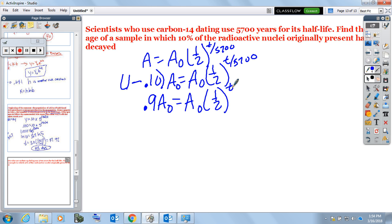Well, now, once again, our A₀s are going to cancel out. So we get 0.9 equals one-half to the t over 5,700 power.